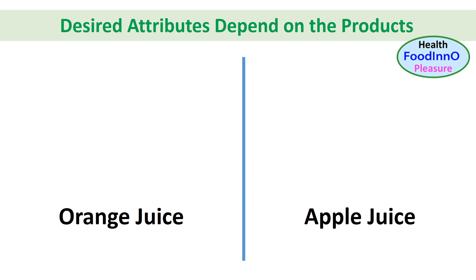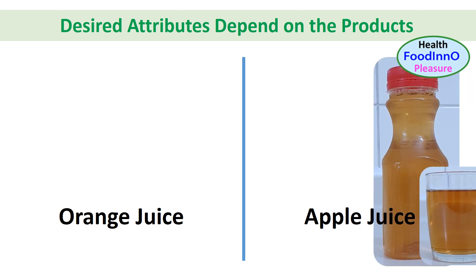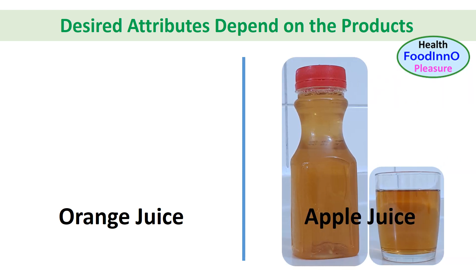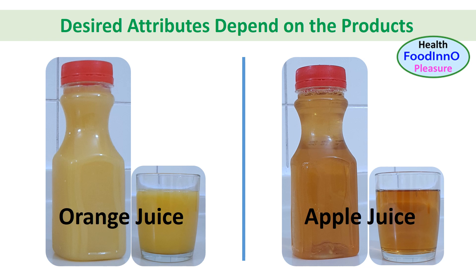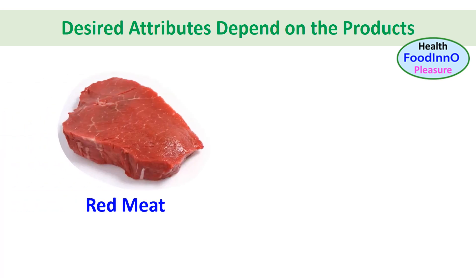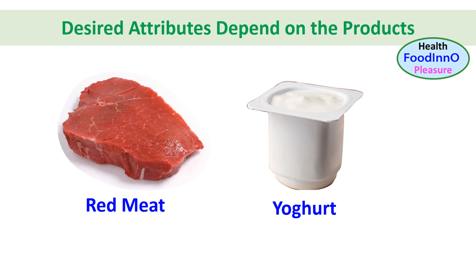Another example: in the case of apple juice, consumers expect it to be clear, whereas orange juice can be cloudy. Clarity of juices depends on the type of fruit juice. In the case of preservation and safety, for red meat heating we need to kill pathogenic and spoilage bacteria, whereas for yogurt we want to preserve beneficial lactic acid bacteria. In this case, selectively preserving bacteria is necessary.